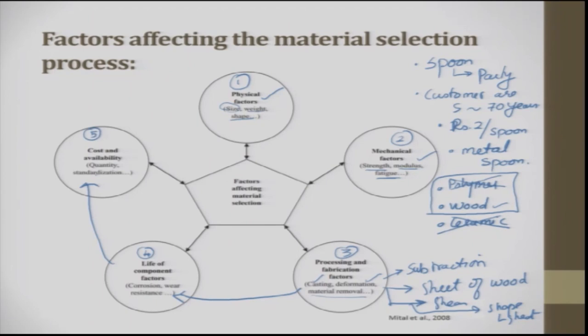Alternatively, if you choose polymer, today there is technology to do metallizing of polymers, which is very common. Spoons today can look like metal spoons but actually be polymer. If you make that choice, the processing route, life cycle, and mechanical properties are completely different. Looking at the options whatever a customer wants, you keep changing the material — and if you make a wrong choice, you might not be able to meet the customer's demand. All five factors are very important.